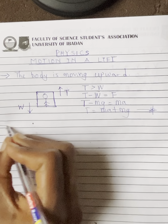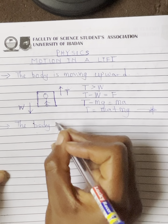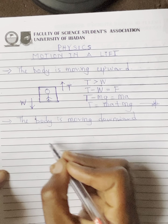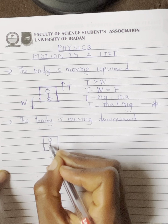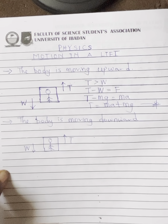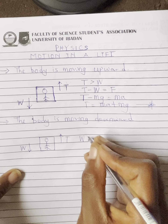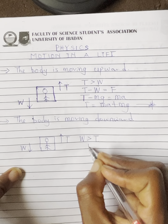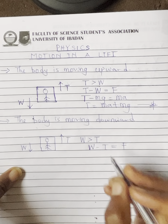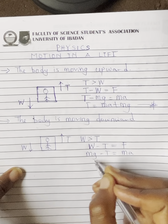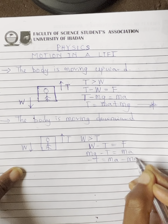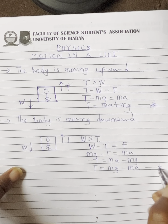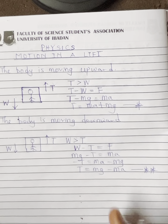The second scenario is when the body is moving downward. When the body is moving downward, it means the weight of the body is greater than the tension in the lift. So if I want to calculate the accelerating force, I subtract the tension from the weight: mg minus T equals ma. Rearranging, T equals mg minus ma. This is the equation we use when the object is moving downward in a lift.